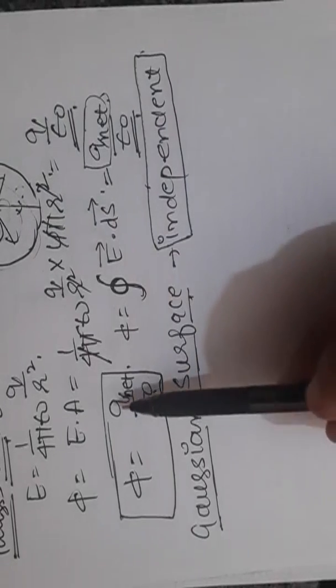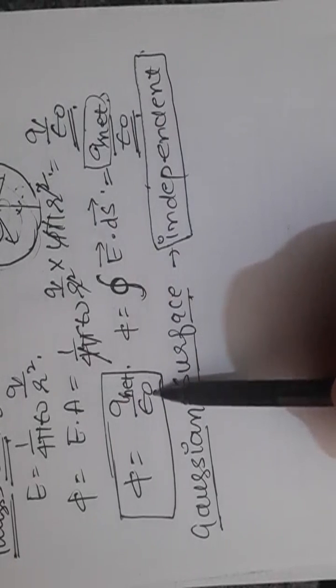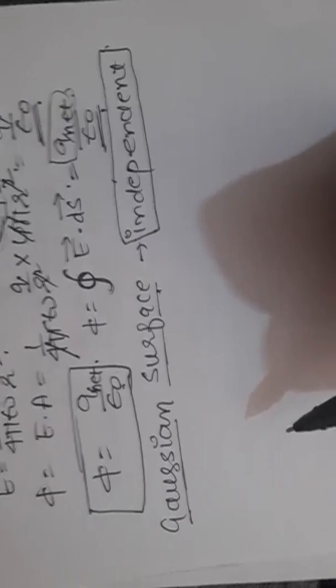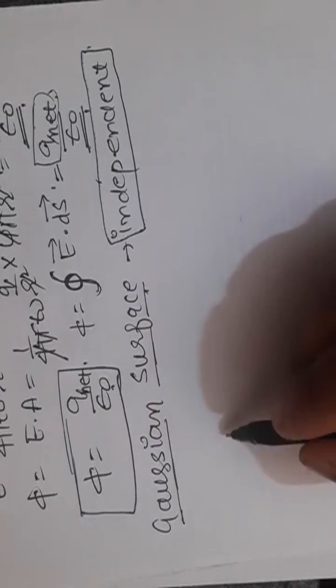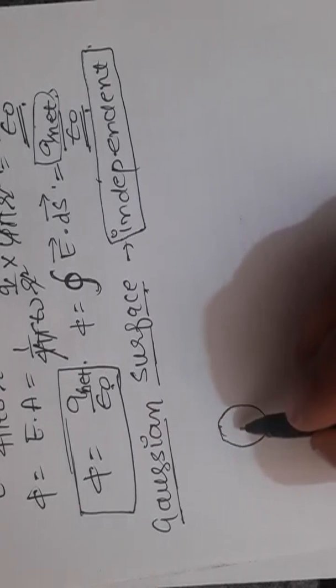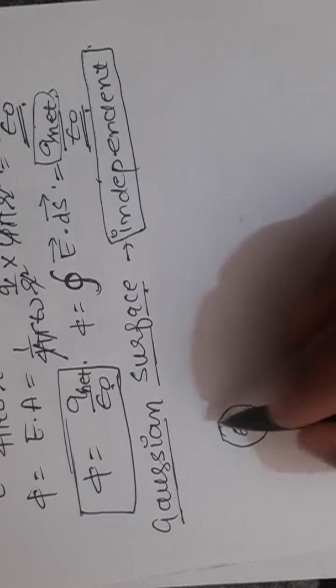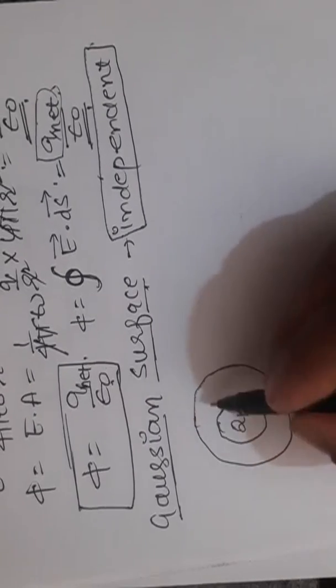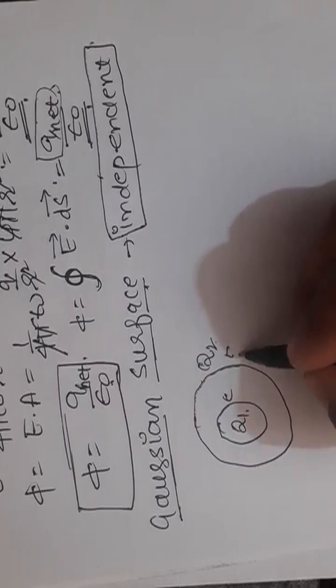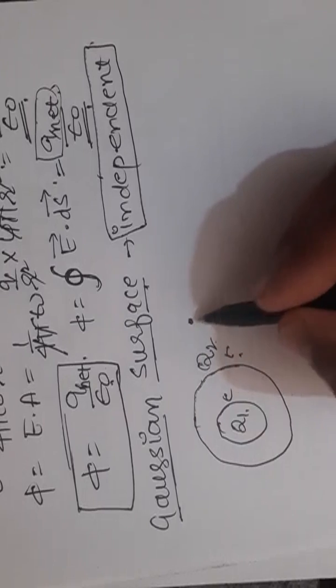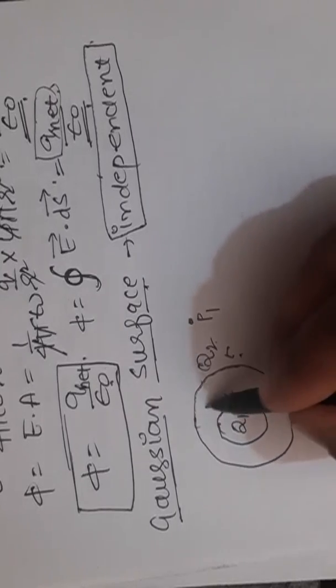So electric flux is net charge divided by epsilon_0. Let me discuss some important numericals. Let us suppose there is a charge Q1 on this surface, another charge Q2 on this surface. I want to find the electric flux at point P1 and P2.